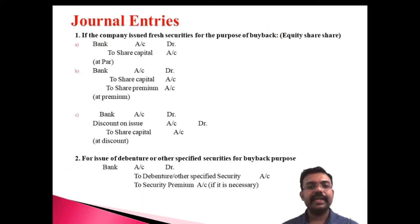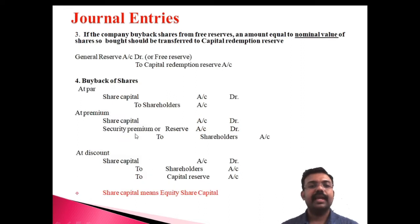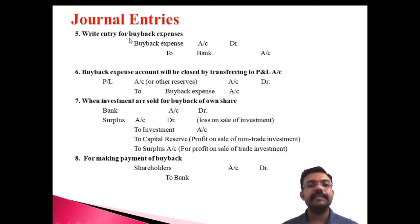The first entry is for companies issuing shares. Then the debenture entry — bank account at debentures. If there is a security premium, that entry is recorded. For using the reserve, the capital redemption reserve account is used. Then the buyback entry at par, at a premium, or at a discount. If there are buyback expenses, that entry is recorded, and investments sold at profit or loss. The last entry is for making payment of buyback — shareholders account at bank.